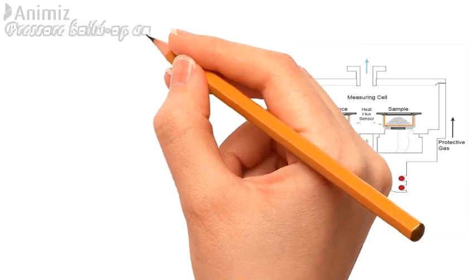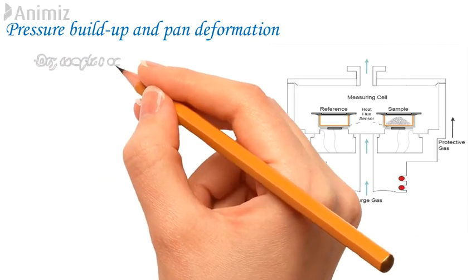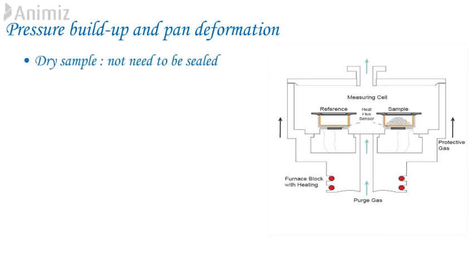3. Pressure build-up and pan deformation. Pressure build-up in an inappropriately chosen pan is a frequent cause of difficulties. It is important to determine whether a sample needs to run in a hermetically sealed pan or not. Dry samples unlikely to evolve significant amounts of volatiles below decomposition do not need to be sealed. Yet if run in hermetically sealed pan then pressure will build up inside the pan as it is heated. Many hermetically sealed aluminum pans cannot withstand high internal pressure and will deform.